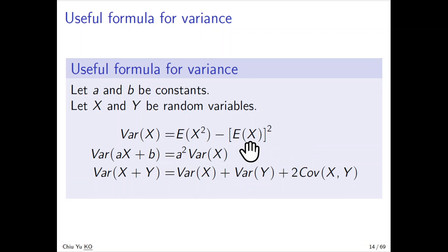Another property is for variance. Again, a and b are constants, and X and Y are random variables. Here we can write variance in two parts: Var(X) = E(X²) - [E(X)]².